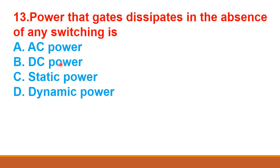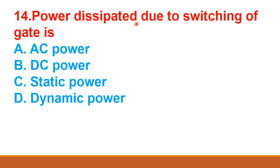Next question: power that a gate dissipates in the absence of any switching is — AC power, DC power, static power, dynamic power. The correct answer is static power. Power dissipated due to switching of gate is dynamic power, so option D is the right answer for that.